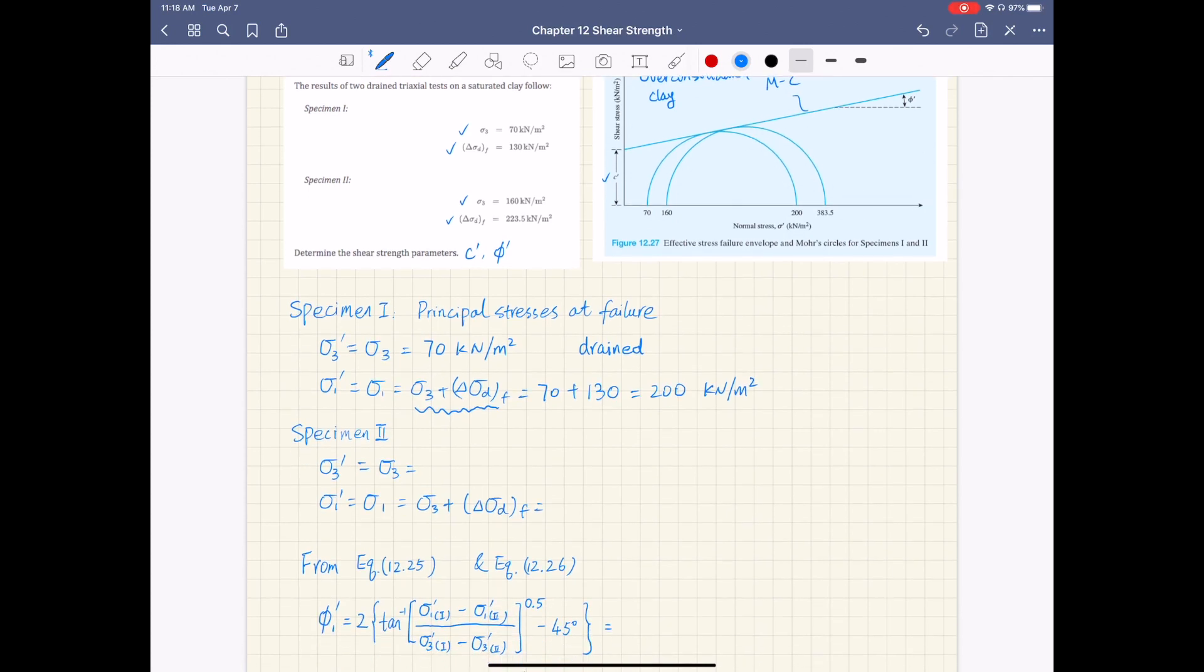For specimen 2 here, again, you're given minor principal stress, sigma 3 at failure, 160 kN per meter square. And the major principal stress is 160 plus 223.5, and that's 383.5 kN per meter square.